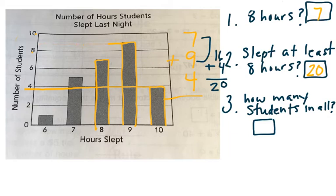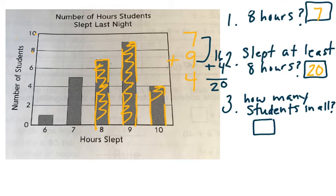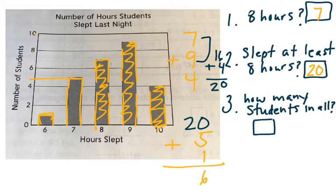Now, my last question is, how many students are there in all? Well, we know in these three blocks, these bars that we just added up, we know that that ended up being 20 students. Now, all I have to do is go ahead and add these students to it, along with these students, and I would get a grand total. So seven hours is five students, and this one is one. So if I add those all together, I get 26 students in all.